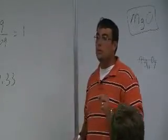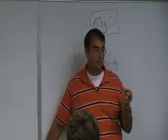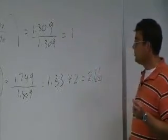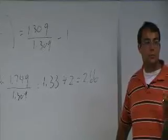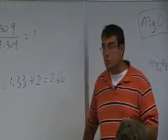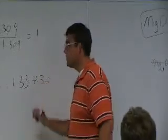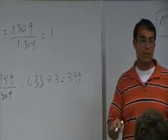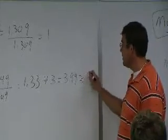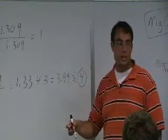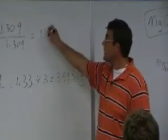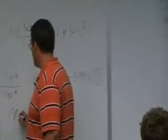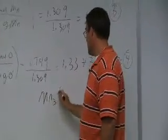So what do you have to do? You have to start picking integers to multiply by. If we pick two, that gives us 2.66 — is that within a tenth of a whole number? No, that was a bad guess. What if you pick three? It's going to be 3.99 — is that within a tenth of a whole number? Yes. So we can call it. Just like algebra, if you do it here you have to do it up top too. So our final answer is Mn₃O₄.